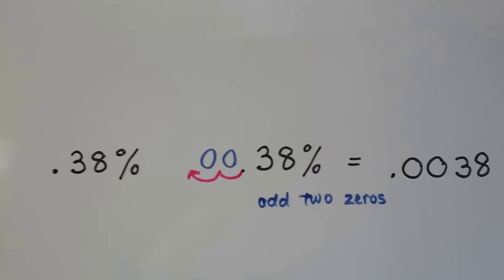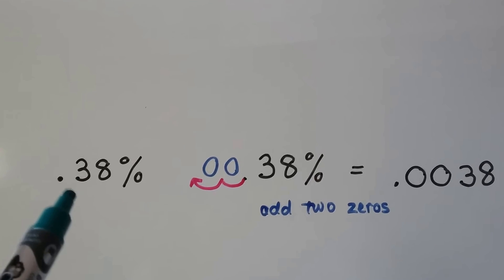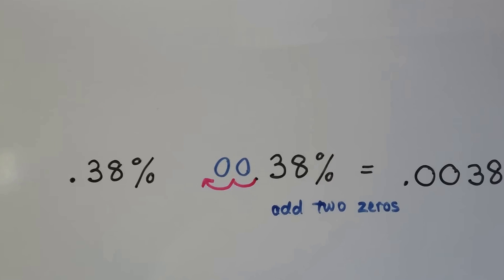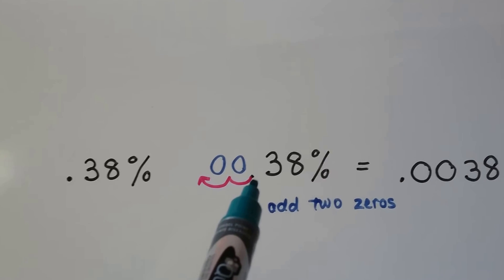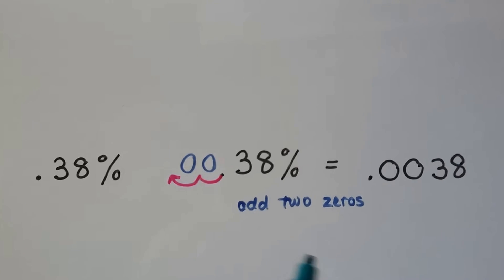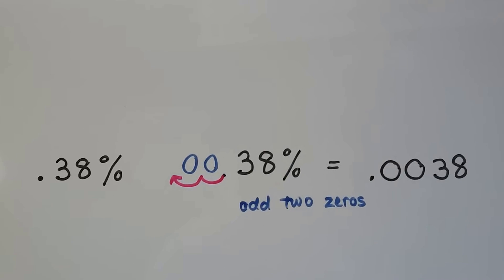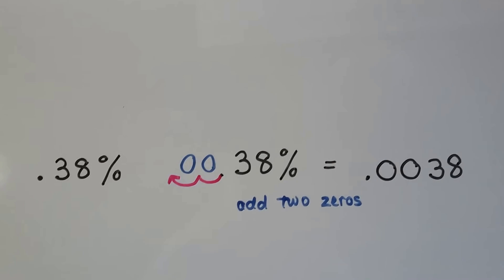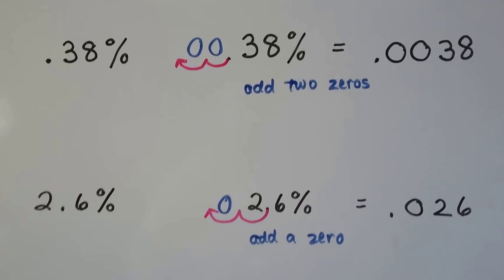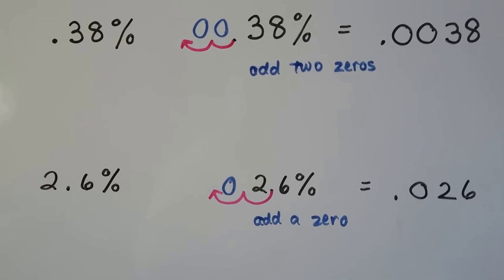Here we've got 0.38%. That means it's not even 1%. When you see a decimal and a percentage, that means it's not even 1%. So we start from where the decimal point is and do our two hops, put two zeros for placeholders, and drop off the percentage sign, and we get 0.0038 for our decimal. This is actually very simple. Just remember the two hops and getting rid of the sign.